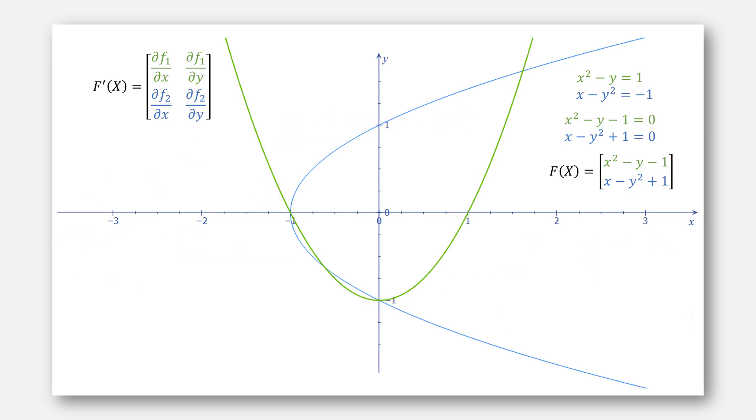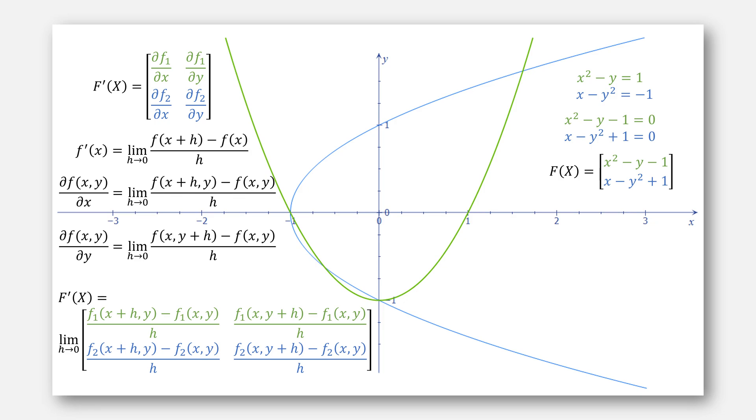But why does this work? Let's take a step back and look at what a derivative actually is given by the limit of this finite difference. The same is true for partial derivatives, meaning what we've done is taken the finite difference to compute an approximation to the Jacobian as h gets small.